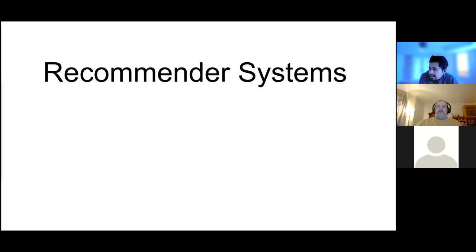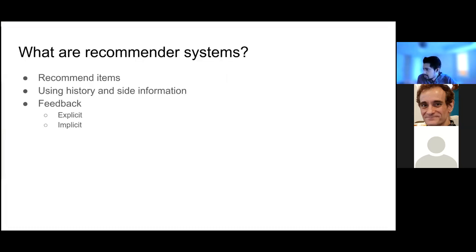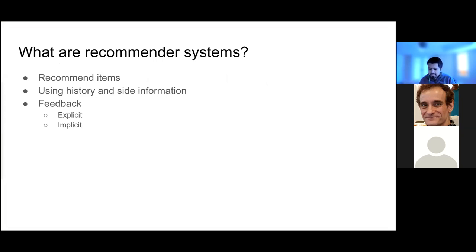Today we will see recommender systems, which is chapter 22 of the book. What are recommender systems? Basically, it recommends items. Suppose we go to the Amazon website — before searching anything, the website recommends items based on our previous purchases or what other users similar to us bought on the site. Recommender systems try to do this using our past history and site information.